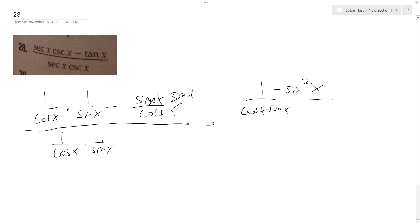Think of it like this. See, now they both have cosine x sine x. Okay, and then over 1 over cosine x sine x.